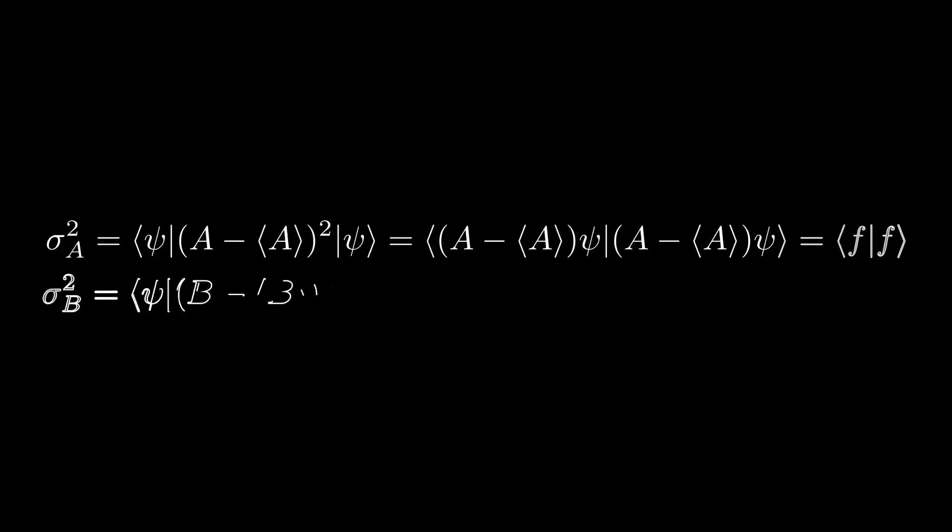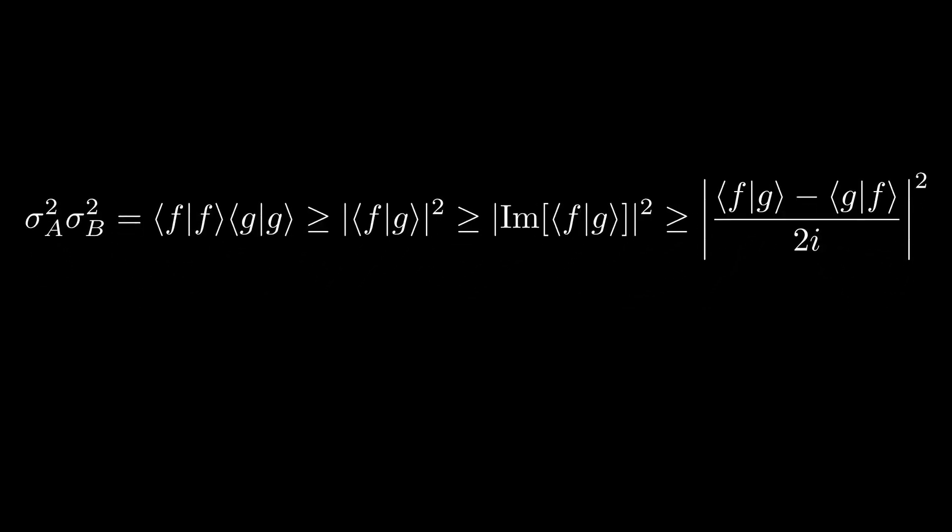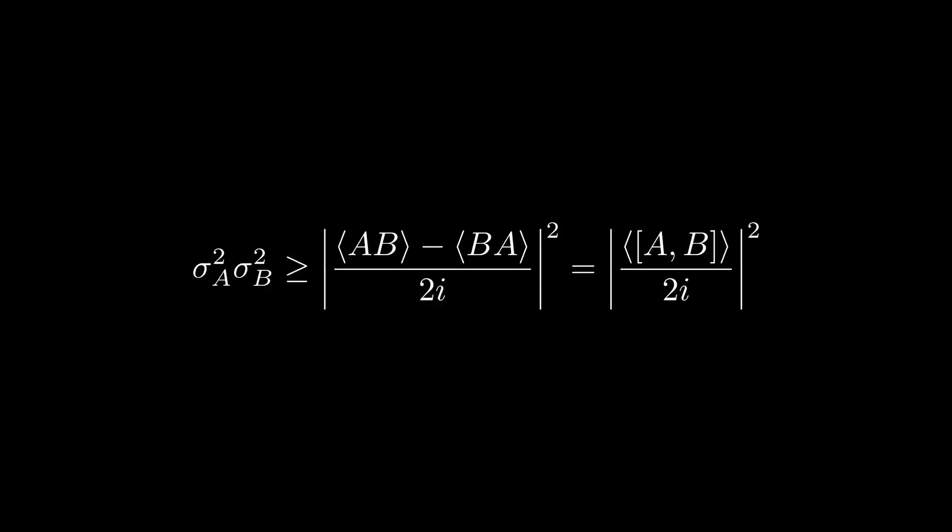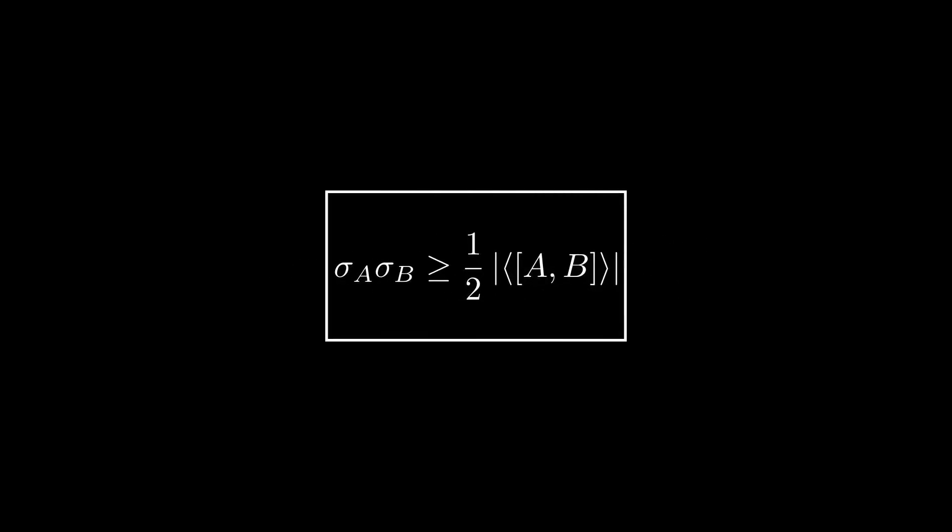To derive this bound, we simply write the definitions of the variances of A and B in Bra-ket notation as follows. Define these kets in the inner product as F and G, respectively. Using the Cauchy-Schwartz inequality, we can obtain the following lower bound. We can then lower bound the absolute value of this inner product squared by the absolute value of the imaginary part squared, which we can write as follows. Evaluating each of these inner product terms separately, we can do some algebraic manipulation to get the following. Substituting these back into the original expression then gives us the bound we desired to show.